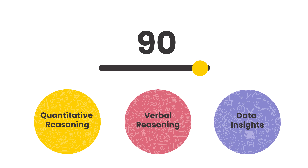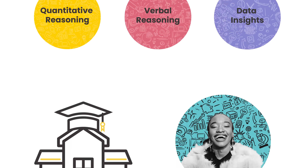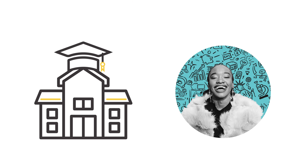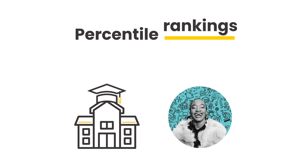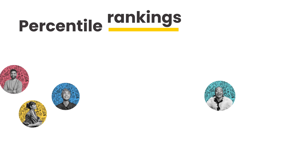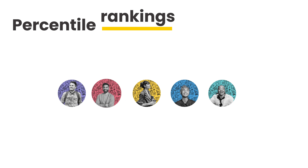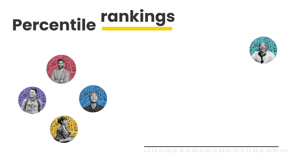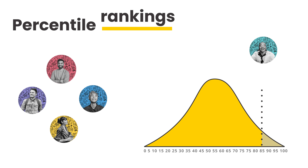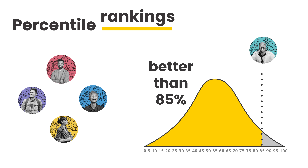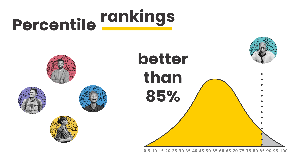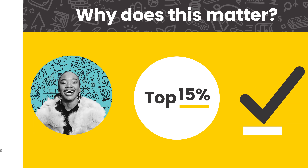Your score is only one measure of your performance. Percentile rankings also provide meaningful insight for both candidates and schools. Percentile rankings show the percentage of test takers you performed better than. For example, if your section or total score is in the 85th percentile, you performed better than 85% of other candidates.